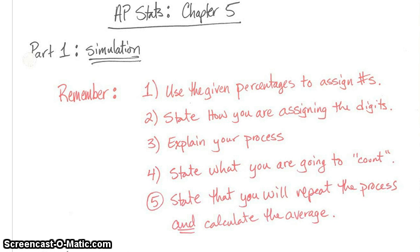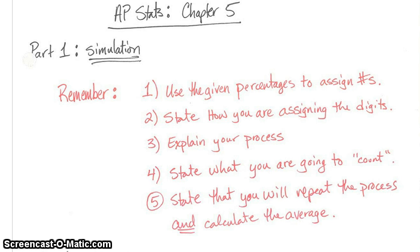For simulation, remember these five facts. Number 1: use the given percentage to assign numbers. Number 2: state how you are going to assign the digits. Number 3: explain your process — how are you going to use the random table? Number 4: state what you are going to count, telling me you'll count the number of blank based on the context of the problem. Number 5: state that you will repeat the process at least 100 times or more and calculate the average of these trials.